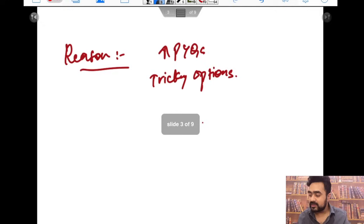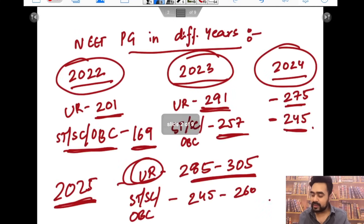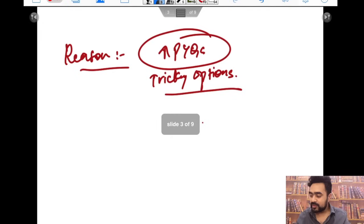For Unreserved in 2024 it was 275, but this year, first of all it was a single shift exam and tricky options were there, and increased previous year questions - much of the questions were repeated as you have seen already in the recalls. So I think the expected cutoff can be 285 to 305, and for ST/SC and OBC it can be around 245 to 260. This is just the prediction based on 2022, 2023, and 2024. This year, much of the questions were repeated from previous years, tricky options, and single shift exam, so cutoff can definitely raise.